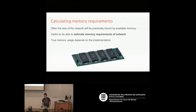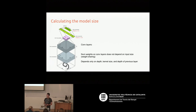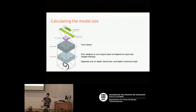When calculating model size — how much memory the parameters take — for convolutional layers, the number of weights doesn't depend on input size. Convolution applies the same operation at multiple locations using weight sharing, so it doesn't matter how big the image is. The number of weights depends only on the depth (number of filters), the kernel size (width and height), and the depth of the layer below.